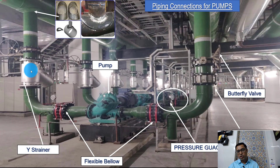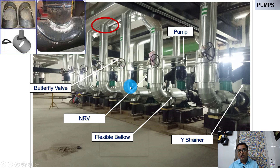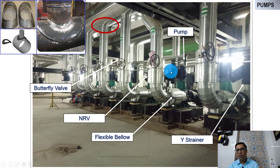The one I showed you earlier is for the condenser water system — you can see the pipes are bare. Now the one I am going to show you is the chilled water system, and that is why the pipes are insulated with cladding. We can see here the isolation valve — butterfly valve. This is a discharge line, so we have an NRV over here. These are the flexible bellows — gone inside the cladding. We have a strainer over here on the suction side. You can see a butterfly valve and then a strainer, and this is the pump. This is how the pump piping connections are done.